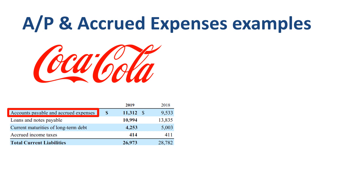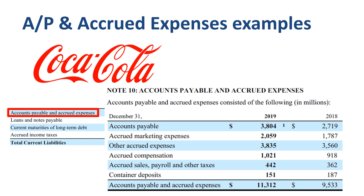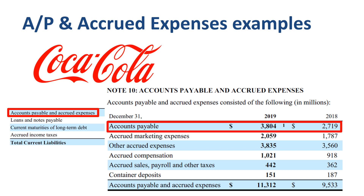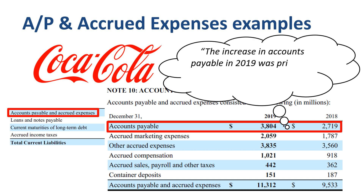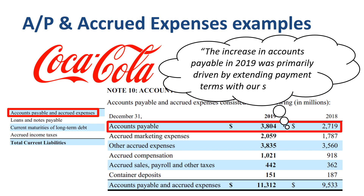Let's start off with Coca-Cola, Note 10 to the financial statements. One of the largest line items is accounts payable — invoices from suppliers that have been received but not paid yet. Its balance went up significantly from $2.7 billion to $3.8 billion, an example of working capital management. In a footnote, the company explains: the increase in accounts payable in 2019 was primarily driven by extending payment terms with our suppliers.